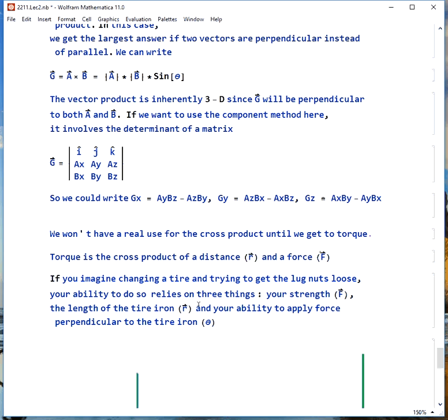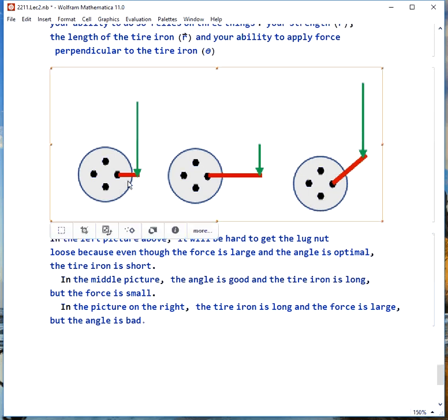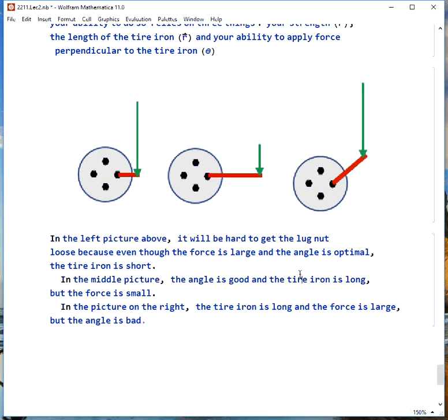We're not going to have anything to do with cross product until we do the torques, which is about three quarters of the way through the course. Torque is the cross product of distance and force. So if you imagine you're trying to change a tire and loosen the lug nuts, being able to do it depends on three things. How strong are you? How long is the tire iron? And are you applying your force perpendicular to the tire iron? So if we look in this picture, on the left side here, this is going to be hard to break this lug nut loose because you're using a lot of force, but you've got a very short tire iron. It's very hard to do it. On the other hand, if you have a very long tire iron, but just a little tiny force, it'll still be a small overall result. Finally, on the far right, you've got a long tire iron, a lot of force. You're not using it the best way, though. Part of your effort is almost trying to snap off the lug nut rather than twist it. So the best possible way to do it would be long tire iron, 90 degree angle, large tire.